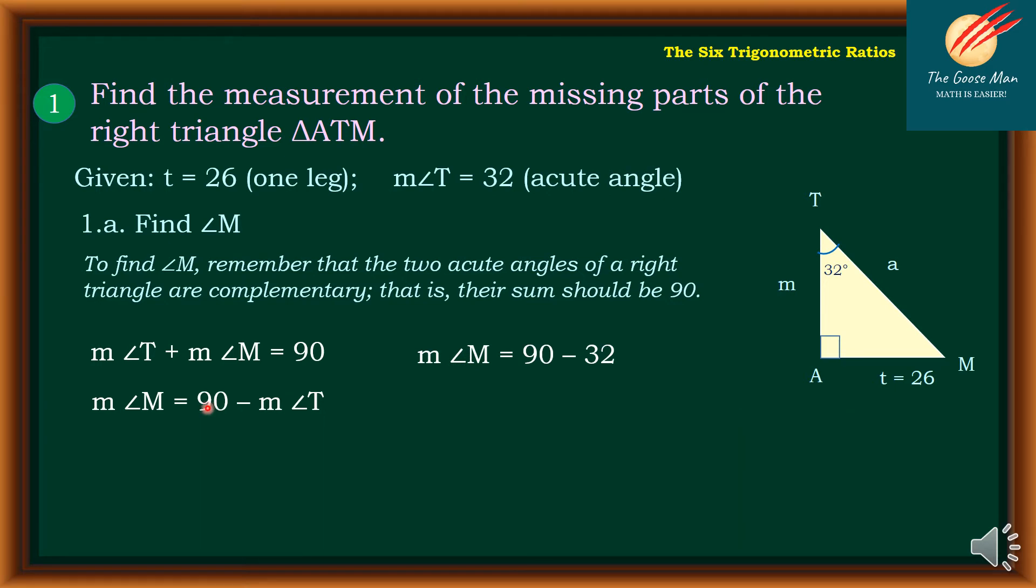Therefore, measure of angle T is simply 32. Substitute that, so we have measure of angle M is equal to 58.